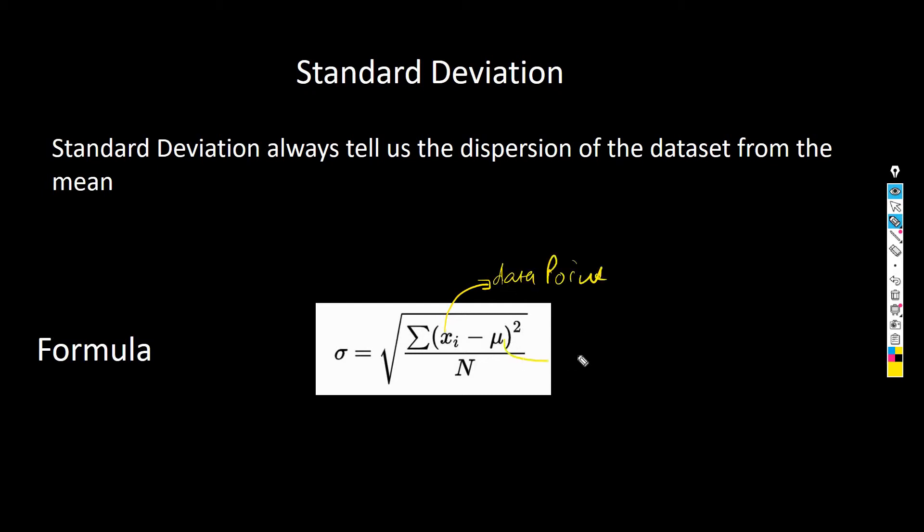Mu is the population mean, which we discussed in our previous video. N is the total number of data sets.